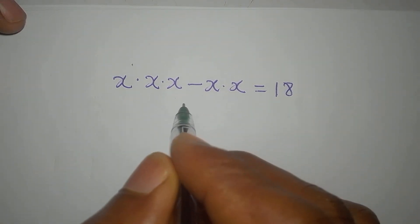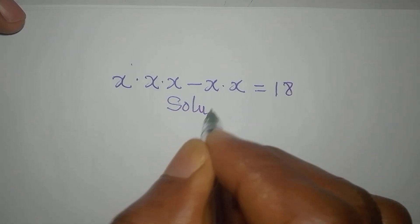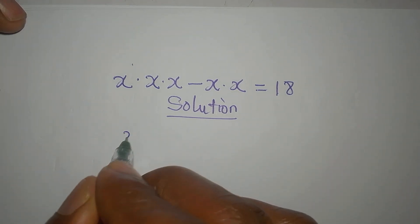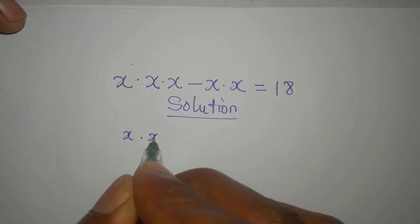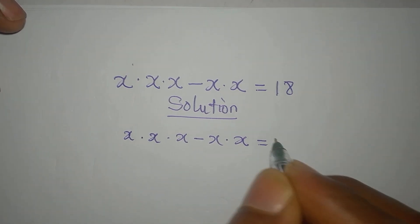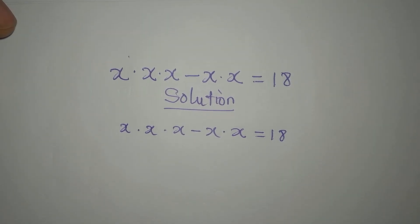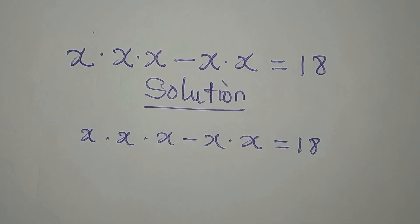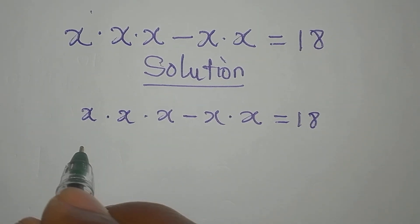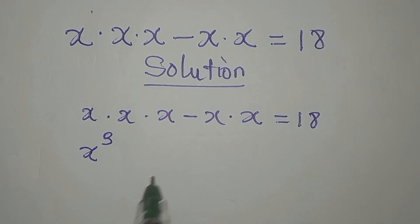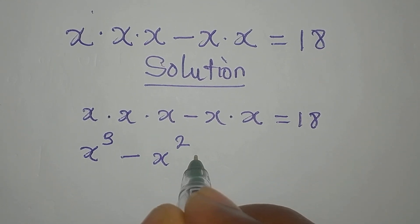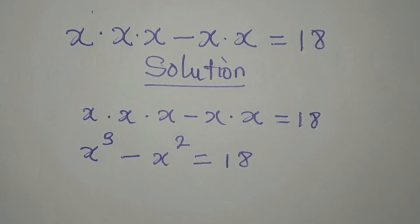Let's provide the complete solution to this problem. We have x times x times x minus x times x equals 18. The first thing we are going to do is multiply: that gives us x to the power of 3, then minus x times x, which is x to the power of 2, and that is equal to 18.